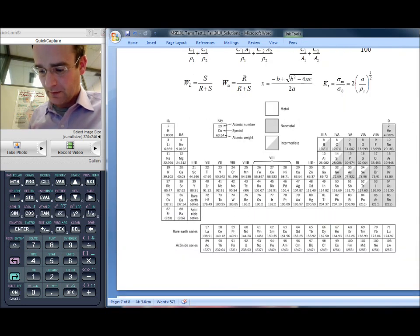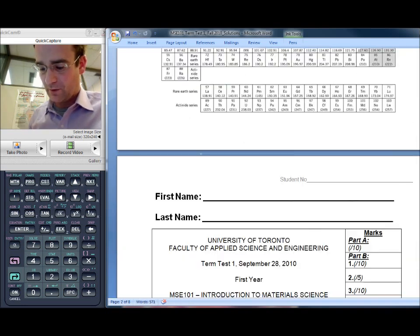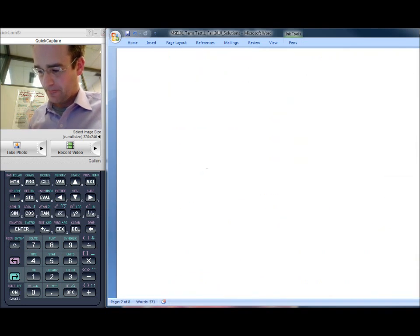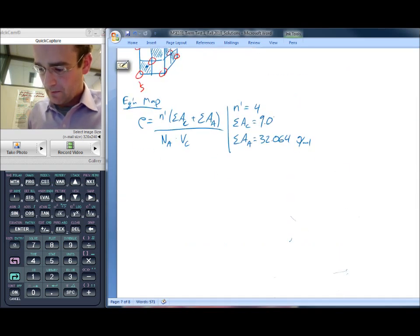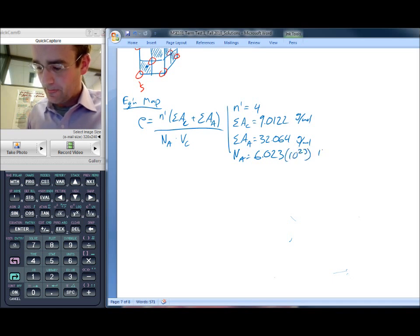And beryllium over here, 9.0122. And of course, we also have Avogadro's number, 6.023 times 10 to the 23rd atoms per mole.